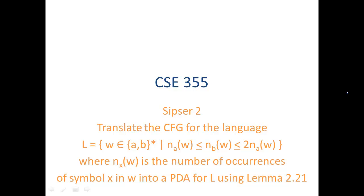In this video we show how to translate the context-free grammar for the language L — the set of strings W over alphabet {A, B} such that the number of A's in the string is less than or equal to the number of B's, which is less than or equal to two times the number of A's. We're going to translate this context-free grammar into a PDA for the language using Lemma 2.21.